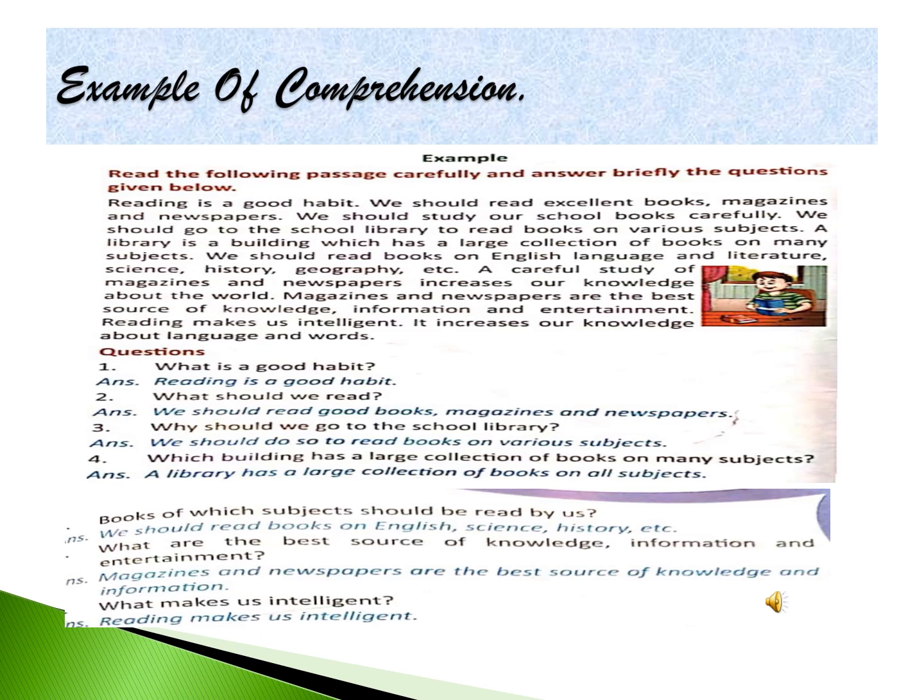Next: Why should we go to the school library? See the next line in the passage — we should study our school books carefully. We should go to the school library to read books on various subjects. So we have got our third answer in the fourth line of the passage. Like this, you have to search the answers — you need to read the passage carefully. Fourth question: Which building has a large collection of books on many subjects? The answer: A library has a large collection of books on all subjects.